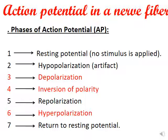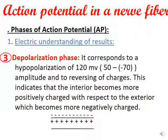Phase six is hyperpolarization, an increase in negativity to a higher value than the resting potential of minus 70. Phase seven is returning back to the resting state. Now let's discuss the phases of the action potential at the level of the electrical understanding.